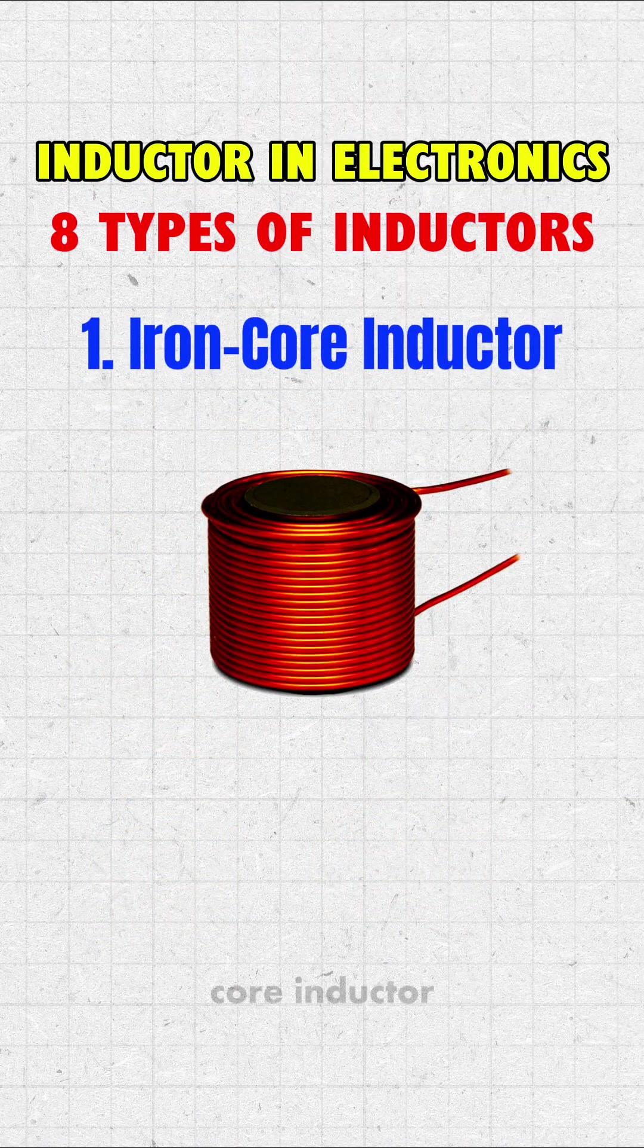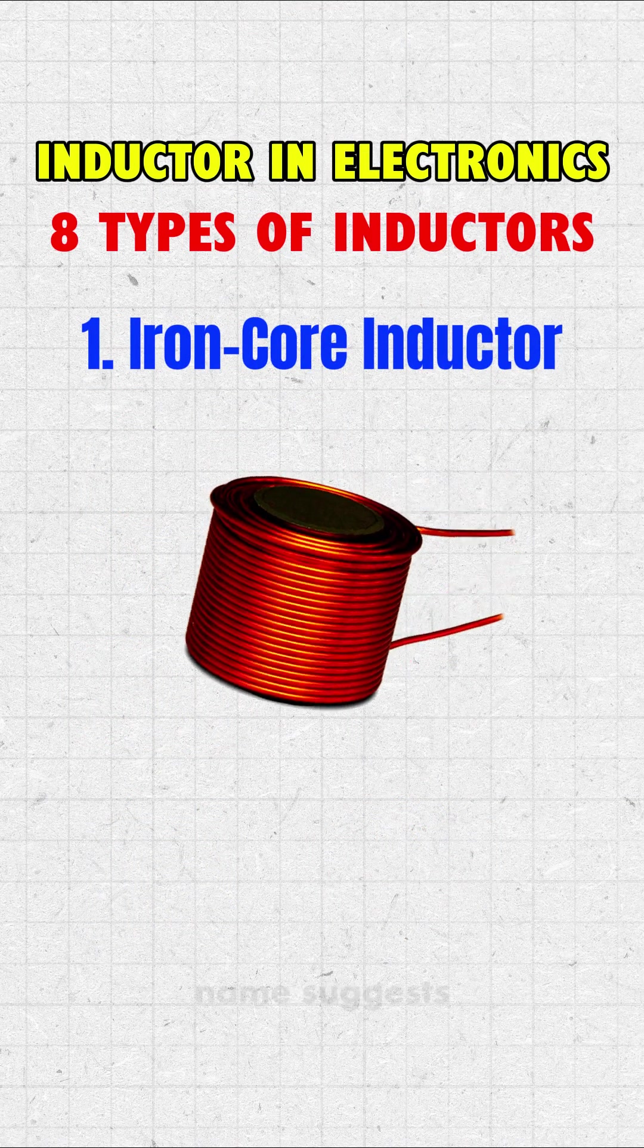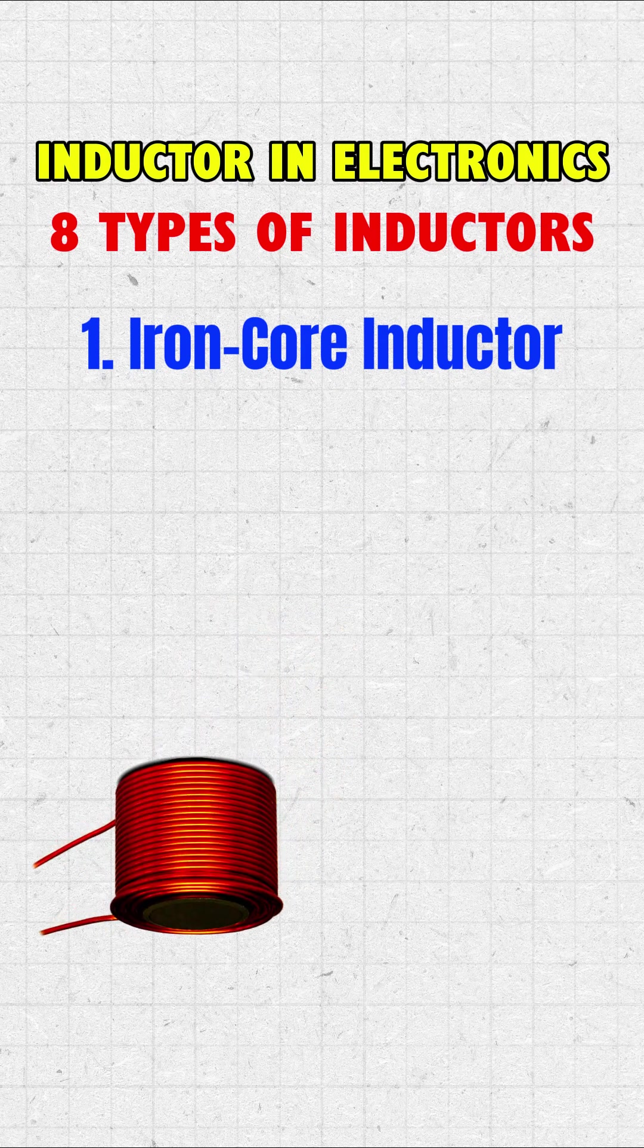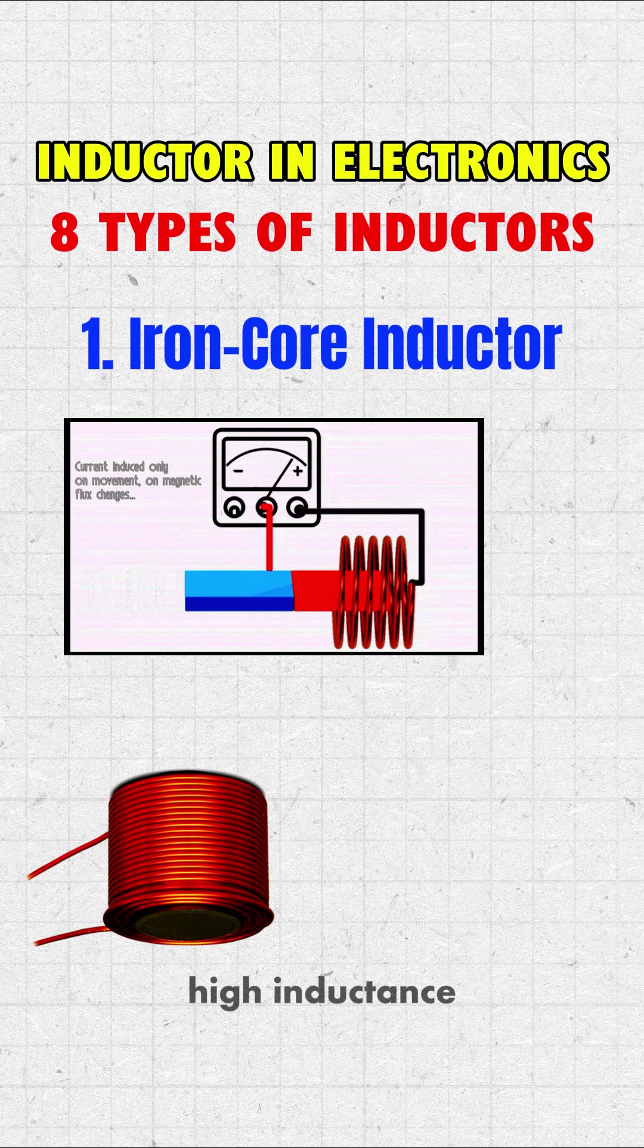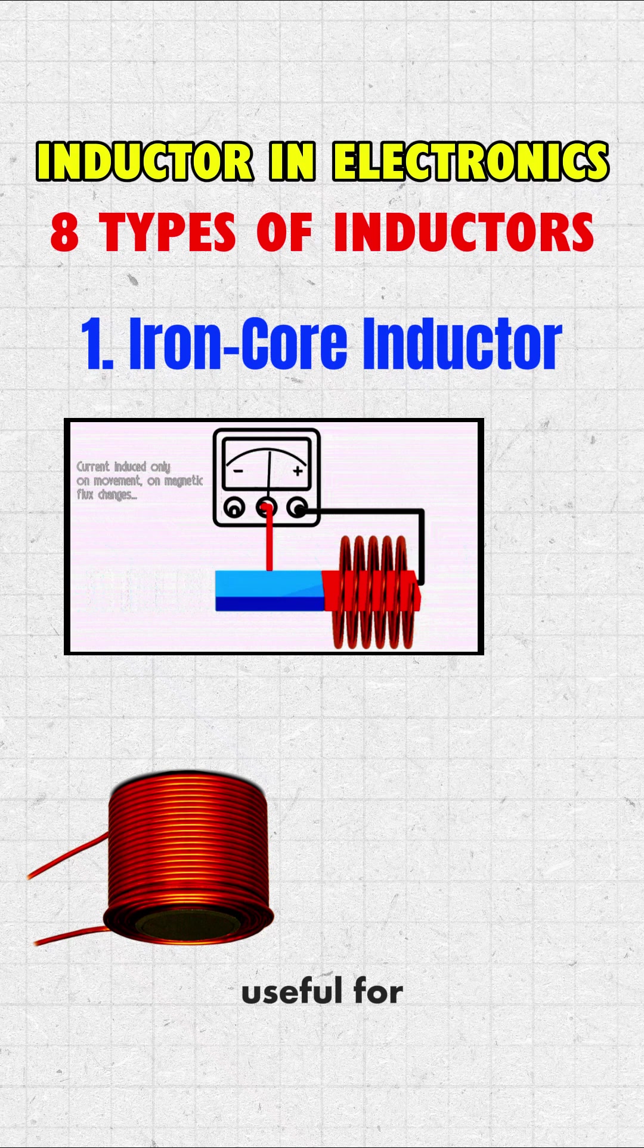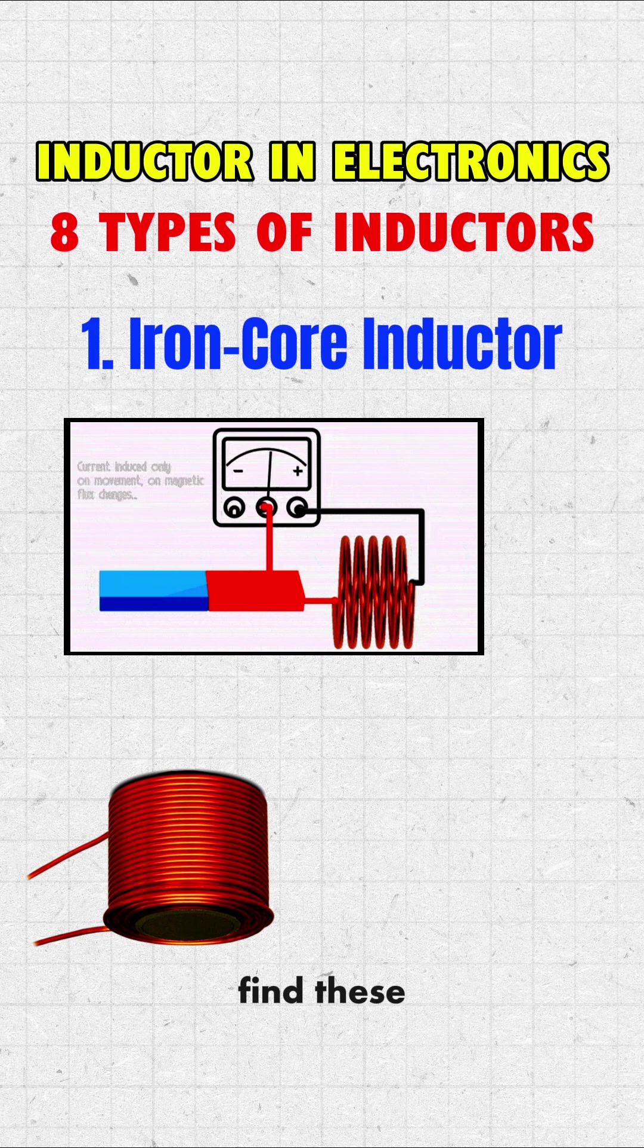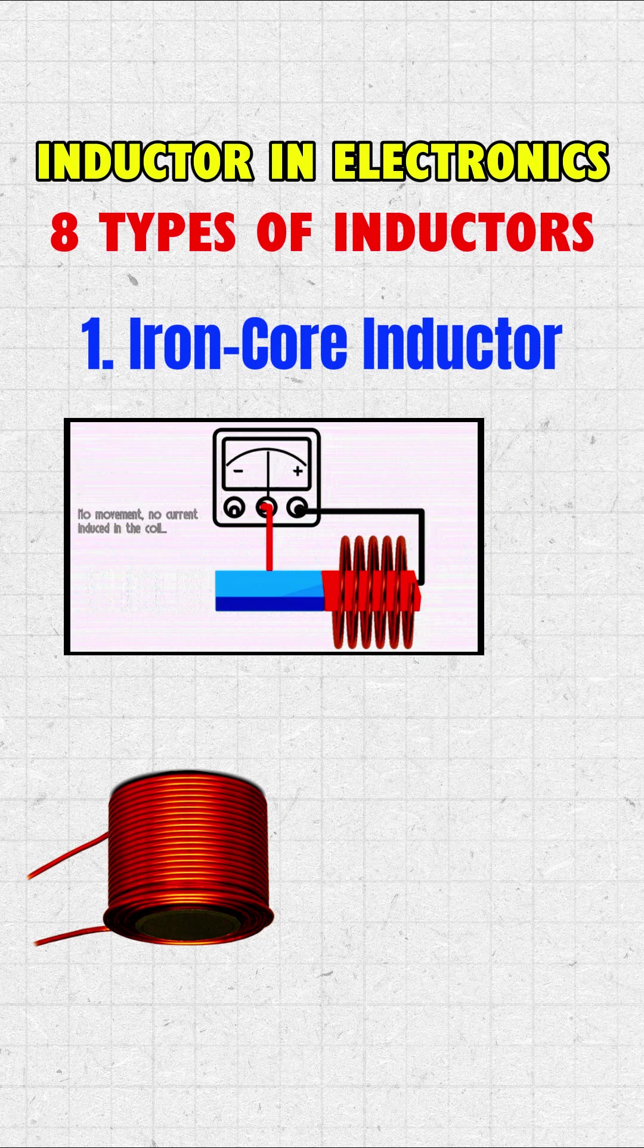1. Iron core inductor. As the name suggests, this inductor has an iron core. It is a high power and high inductance type, making it useful for applications that need strong magnetic fields. However, it is not suitable for high frequencies due to energy losses. You can find these inductors in audio equipment and power supply circuits.